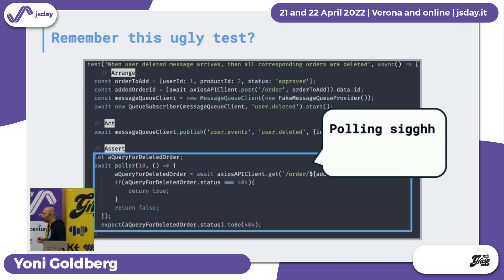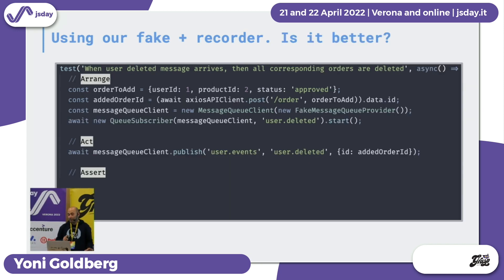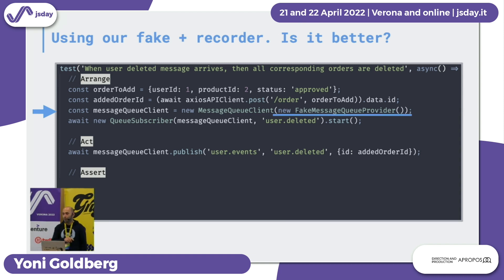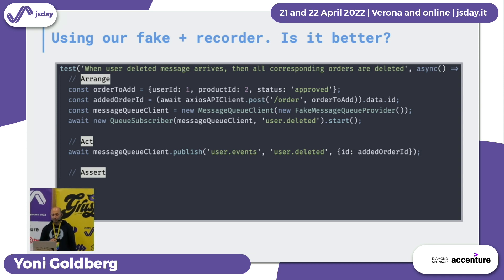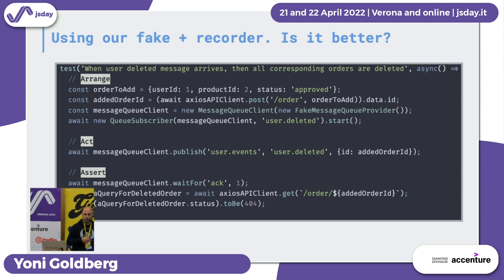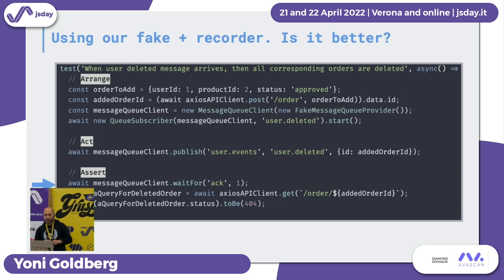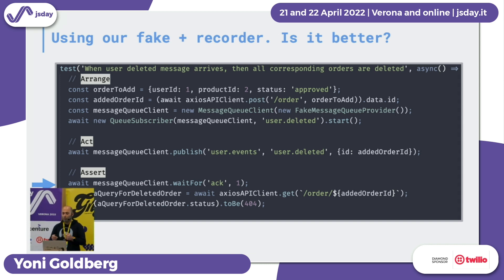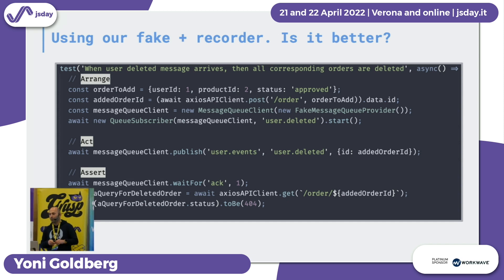Remember that ugly test with a poller? Let's make it much better. It's the same test — when a 'user deleted' message arrives, we want to delete all orders. We add a new order to the system. But now when we initialize the message queue client, we provide the fake in-memory provider we just created. Then we start listening to the fake queue's publish event. Now we call our recorder with the convenient 'wait' method, asking it to please wait until we get one acknowledgement. In other words, once the code finishes processing the message and acknowledges back to the queue, we listen for that event. Once the promise resolves, we know everything is done, and now we can assert.